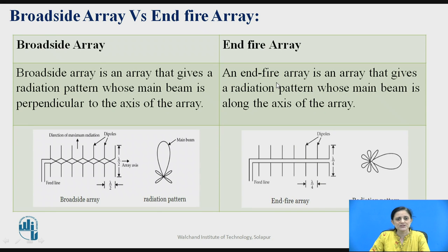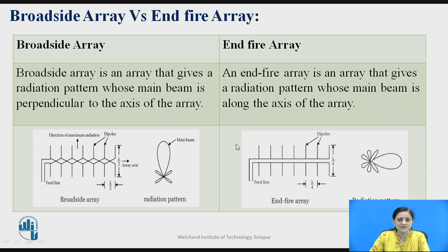Let us differentiate between the two types of antenna array: broadside array and end fire array. Broadside array is an array that gives a radiation pattern whose main beam is perpendicular to the axis of an array. Whereas in the case of end fire array antenna, the array gives a radiation pattern whose main beam is along the axis of an array. These two figures illustrate the difference between each type.